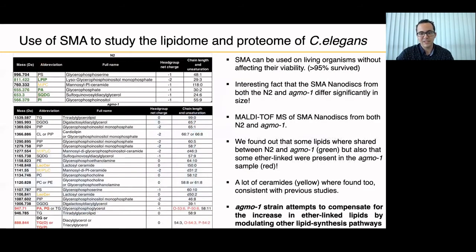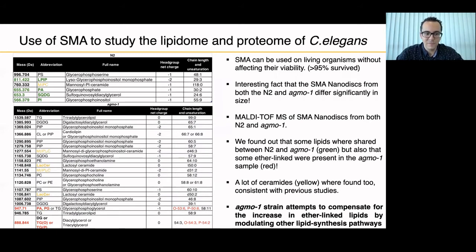Finally, we used MALDI-TOF on the SMA-extracted material. We found lipids shared between N2 and Agmo1 (shown in green), ceramides (in yellow) affecting the buoyancy of the worm, and — most excitingly — ether-linked lipids identified from the Agmo1 mutant (in red). From Agmo1, we found many more different lipids compared to N2. We think the Agmo1 strain attempts to compensate for the increased ether-linked lipids by modulating other lipid synthesis pathways.